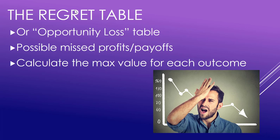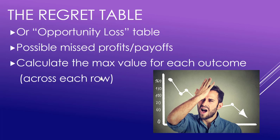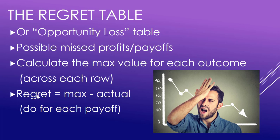To get this regret table — and we're going to look at it in a minute in Excel — you're going to calculate the max value for each outcome. Previously we did it down the decisions, but now we're doing it across the outcomes. So go across each row and take the difference between those max values and the actual values; that will give you your regret values. We do this for each payoff. Let's have a look at what this looks like in Excel.